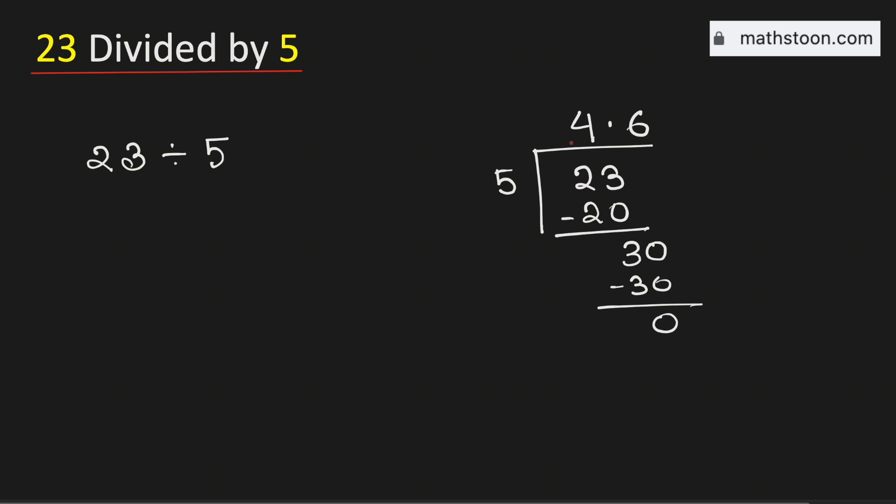Therefore 23 divided by 5 is equal to this number. This means 23 over 5 is equal to 4.6. And this is our final answer.